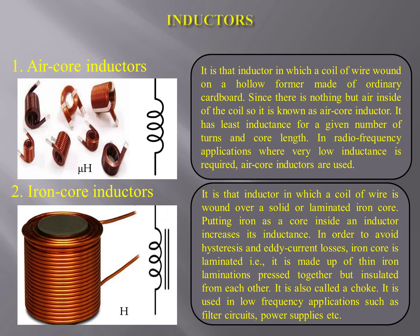Iron core inductors — you can see the figure and its symbol on the screen. It is that inductor in which a coil of wire is wound over a solid or laminated iron core. We all know that iron as a core inside an inductor increases its inductance. In order to avoid high stresses and eddy current losses, the iron core is laminated — meaning it is made up of thin iron laminations pressed together but insulated from each other. It is also called a choke. It is used in low frequency applications such as filter circuits, power supplies, etc.